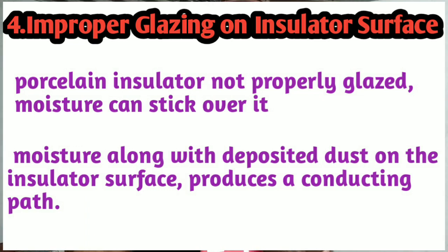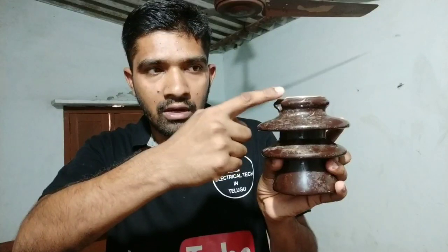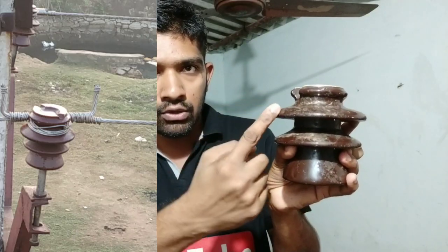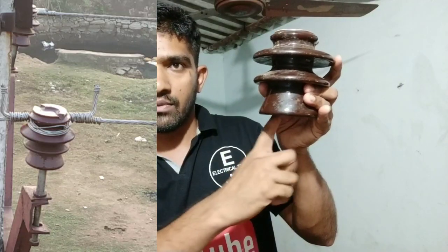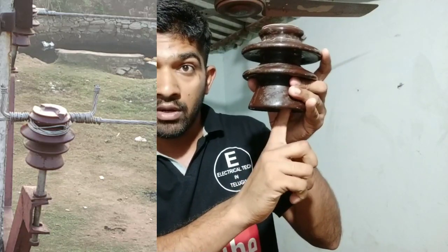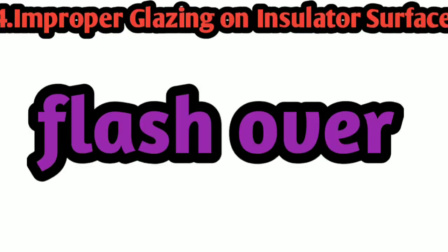There is a conducting path formed on the insulator surface. When there is a conducting path on the overhead line with current carrying, there is leakage. Along the steel rod arrangement, there can be a flashover. When there is a flashover, there is an insulator fail.